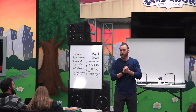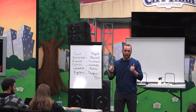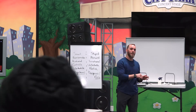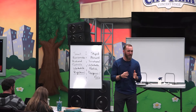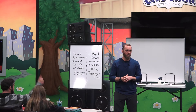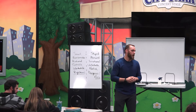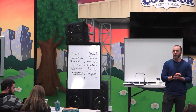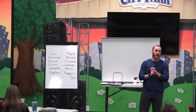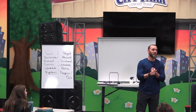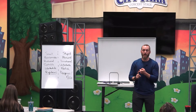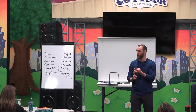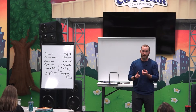Before I get into tonight's lesson, I wanted to quickly review what we covered last time. Last week we spent a long time on the Kalam Cosmological Argument. To boil that down into one sentence: the universe had a beginning and therefore had a cause, and that cause appears to have all the attributes of what we know as the biblical God. So the universe began and God created it.